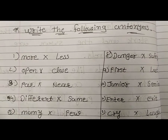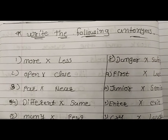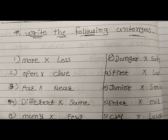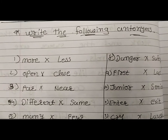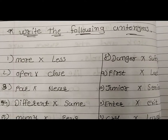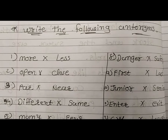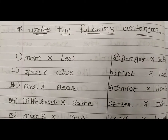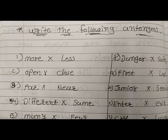First आपने लिखा था verb and semester 2. तो series number 2 करके लिखना है antonyms. Antonyms means opposite words. Meaning of opposite words. Antonyms. ये भी आपको open your new page. New page में ऊपर heading लिखना है antonyms, और फिर ये लिखना है: Write the following antonyms.